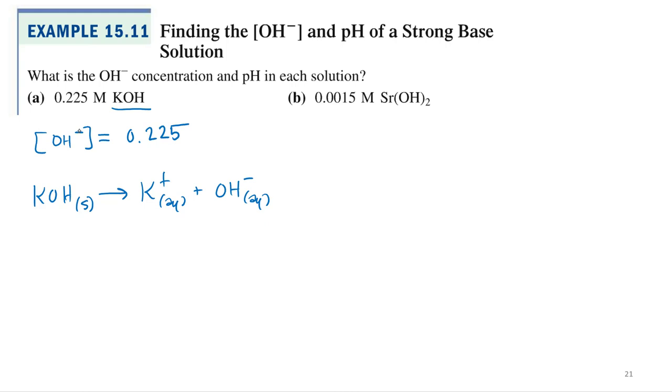It's pretty straightforward except for the fact that I've got my hydroxide concentration not my hydronium, so it's going to be a two-step calculation, a little bit more involved than the strong acid. First I calculate the pOH: pOH equals negative log of the hydroxide, so negative log of 0.225.